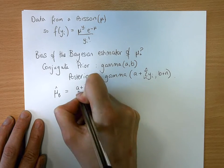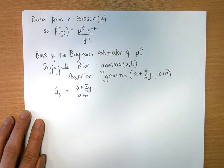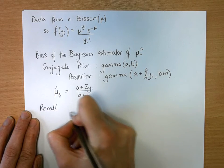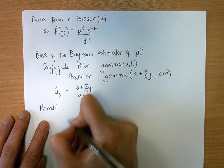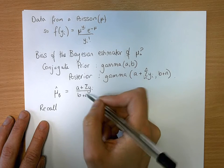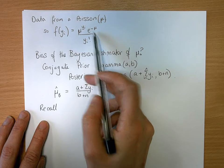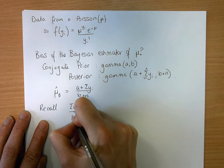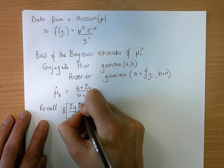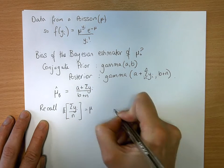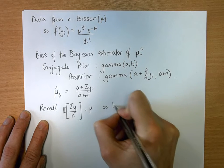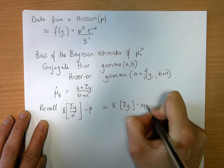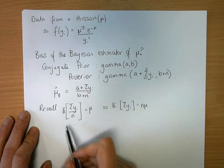Now we recall that the mean of a Poisson distribution is mu. So we would say the sum of yi over n, the expected value of this is equal to mu. So the expected value of the sum of yi is equal to n mu.